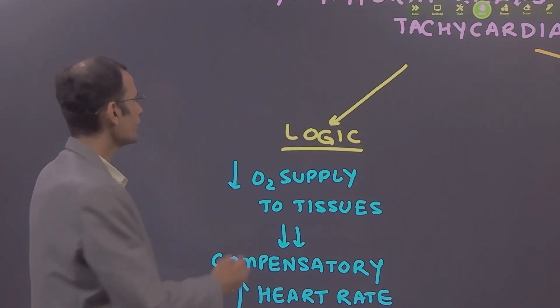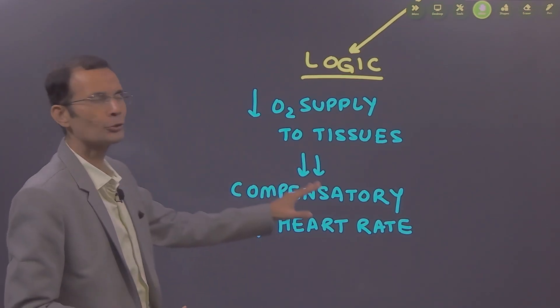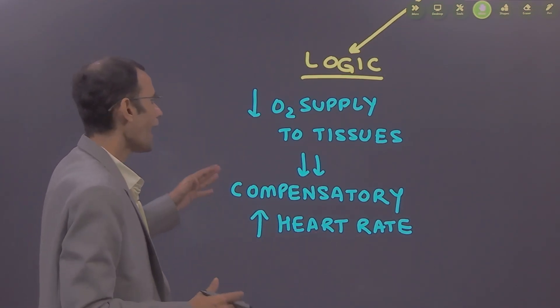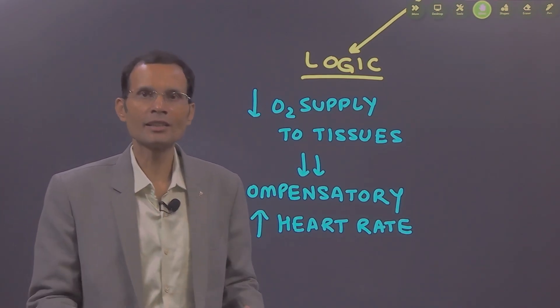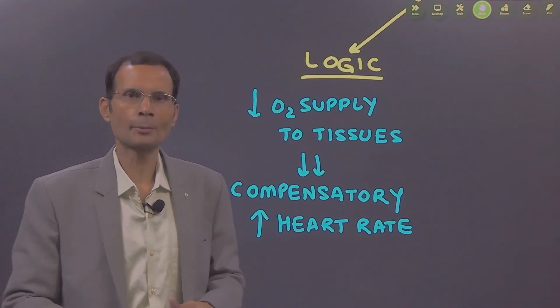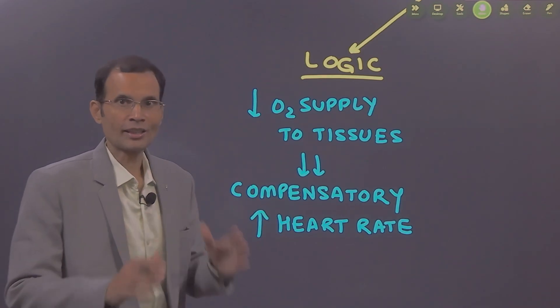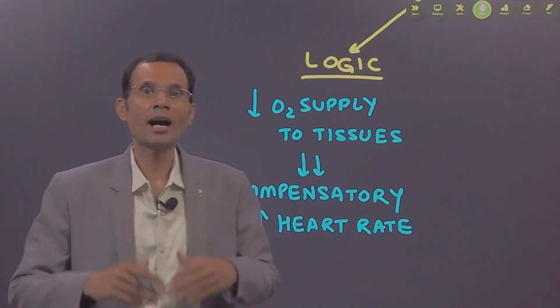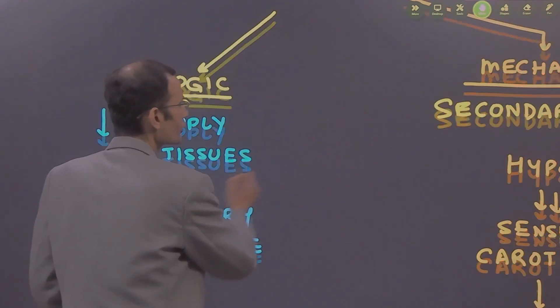Hypoxia means a reduced oxygen supply to the tissues. As a compensatory mechanism, the heart rate increases so that the cardiac output will increase and more blood will be supplied to the tissues. This is the logic, but the question is asking you to explain the mechanism behind it. Let's see what the mechanism is.